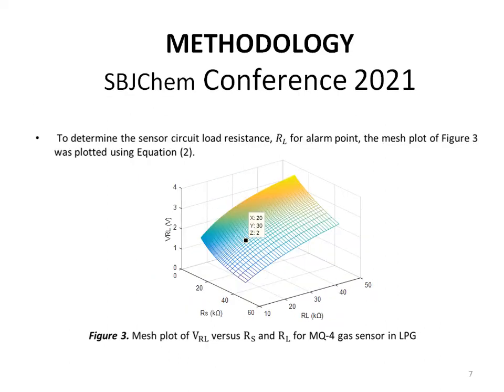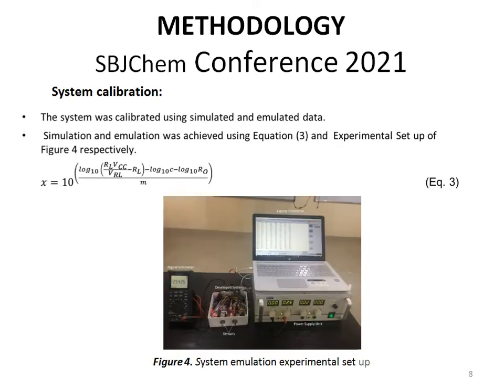To determine the sensor circuit load resistance value RL for alarm points, the mesh plot of Figure 3 was plotted using equation 2. The developed system was calibrated using simulated and emulated data. Simulation was achieved using equation 3, while emulation was achieved using the experimental setup of Figure 4.